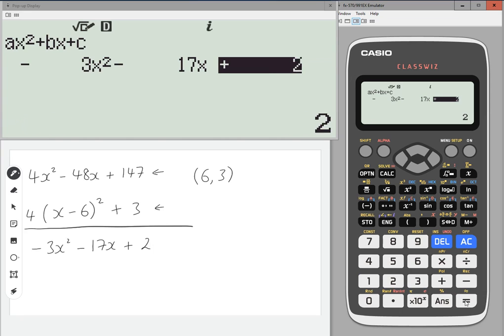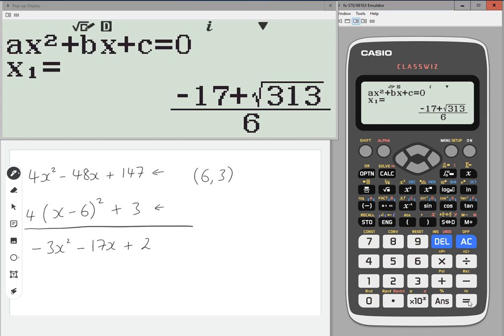And two. Right. Press equals. So it's giving me the two values of where it crosses the x-axis. We don't want those.